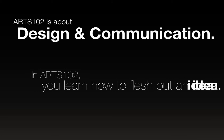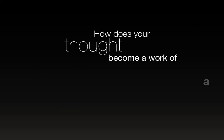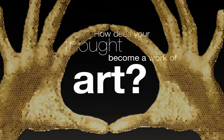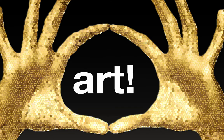Arts 102 is all about design and communication. We're going to learn about the process of creating visual art and visual communication, as well as the communication process in general. Basically we're going to learn how to brainstorm an idea, flesh it out, and turn that into a final piece. The core idea I want you to learn is: how does your thought become a work of art? That's our goal this semester.